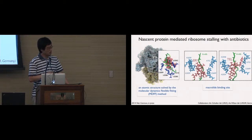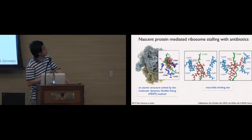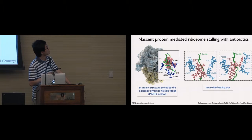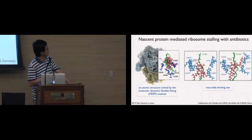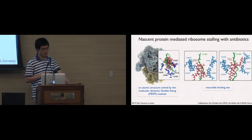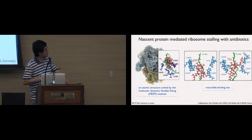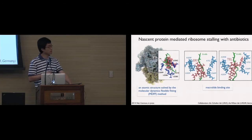The cryo-EM density is at 5.5 angstrom resolution. We used this density map to model the atomic structure of this complex using a method called molecular dynamics flexible fitting, which is a method developed in the Schulten lab.